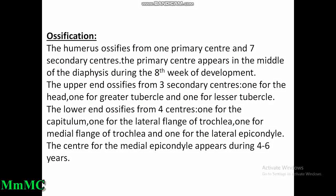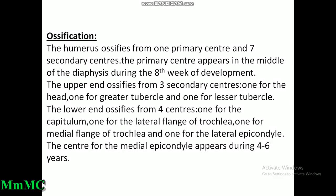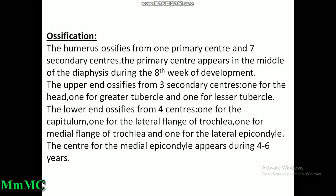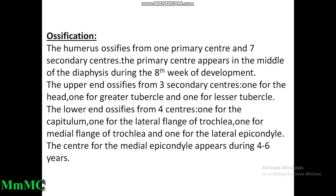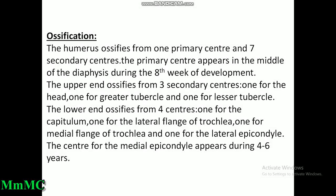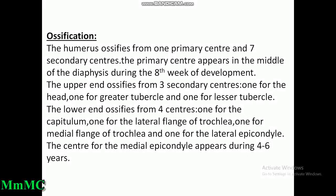Ossification of the humerus: the humerus ossifies from one primary center and seven secondary centers. The primary center appears in the middle of the diaphysis during the eighth week of development. The upper end ossifies from three secondary centers — one for the head, one for the greater tubercle, and one for the lesser tubercle.